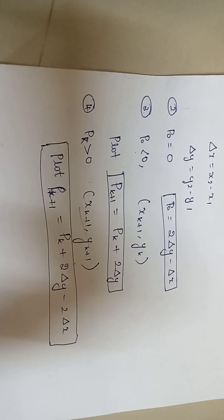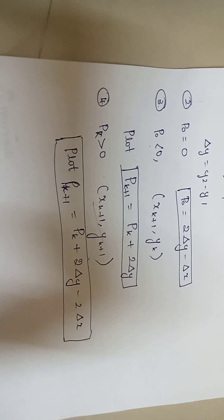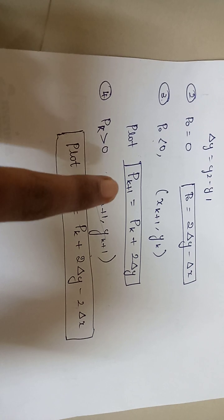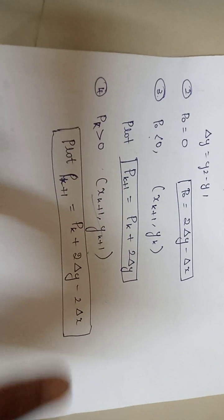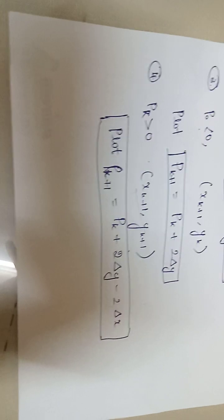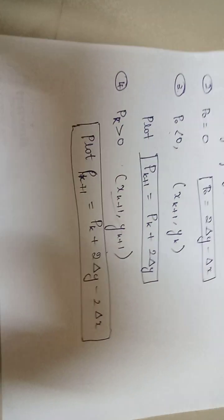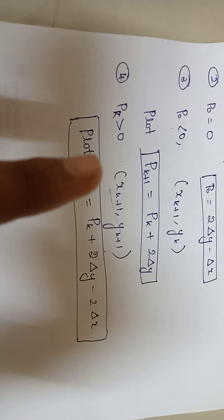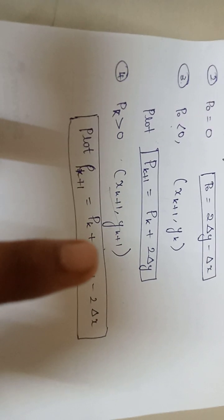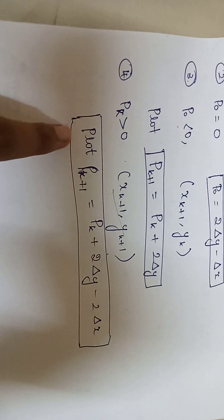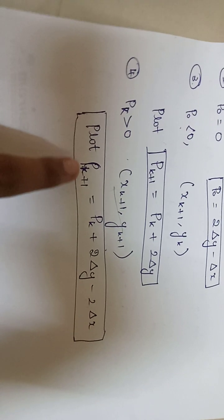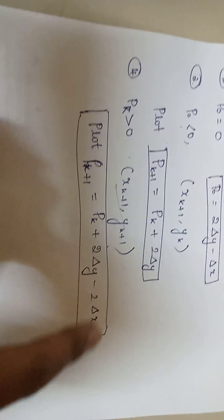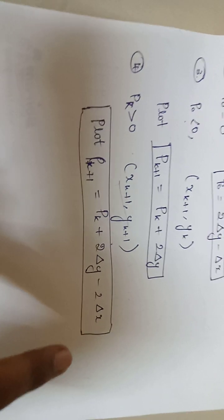If P0 is less than 0, x is increased by 1 and y remains constant. Plot the next point using the formula: Pk+1 = Pk + 2Δy. In the fourth step, if P0 is greater than 0, increase both x and y by 1, and find the next point using: Pk+1 = Pk + 2Δy minus 2Δx.